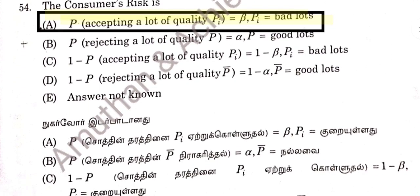Question 54: Option A. The probability of accepting a lot of quality PA, which is equal to beta, refers to the probability of accepting bad lots. 54 option A is correct.